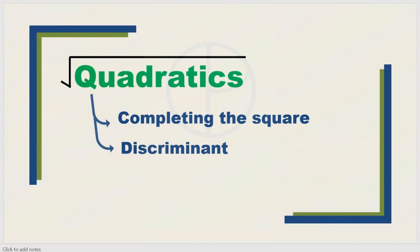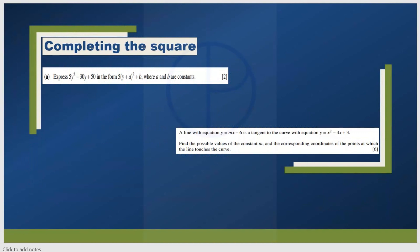The next topic is quadratics, and from quadratics around 6 to 8 marks are asked. Most question papers have a question from completing the square. Almost all question papers have a question from discriminant. Completing the square questions are usually asked for 2 to 3 marks, and discriminant questions you will get around 5 to 6 marks. Sometimes you will get a question combining completing the square with transformation of functions.